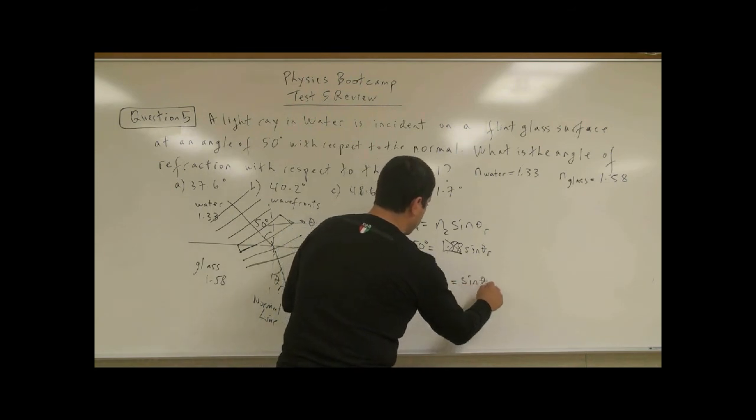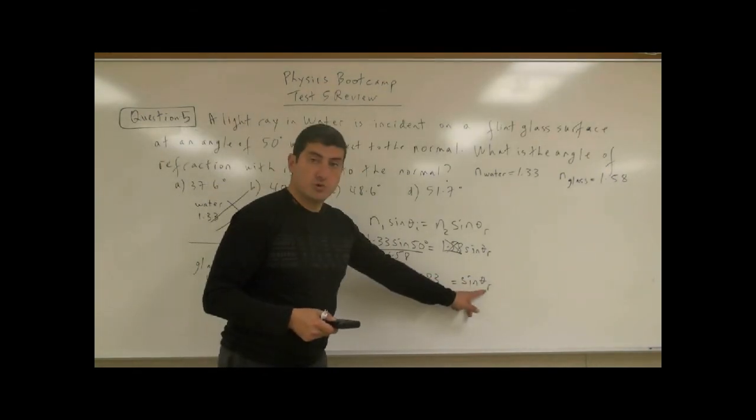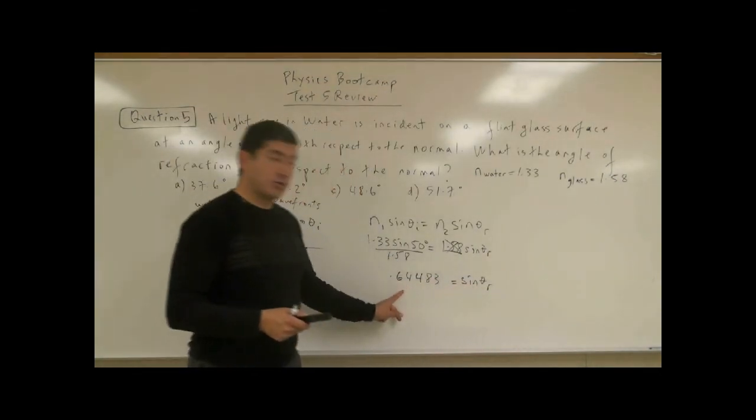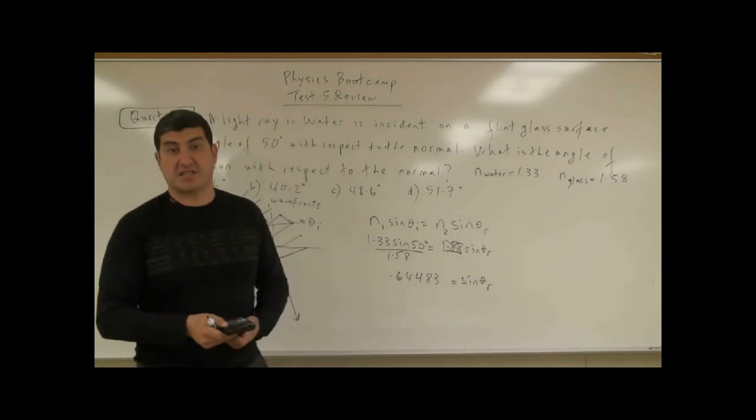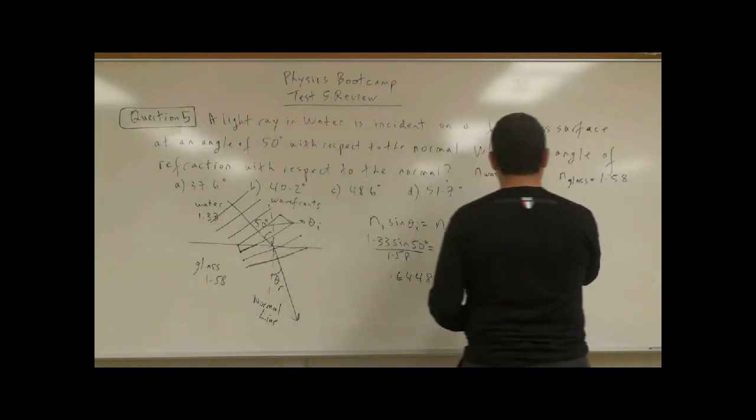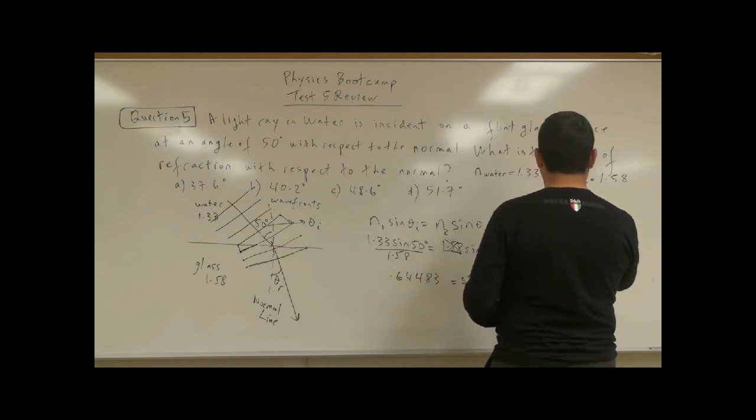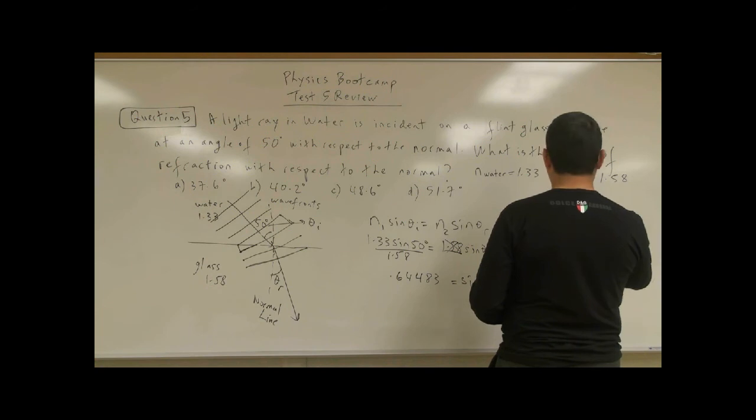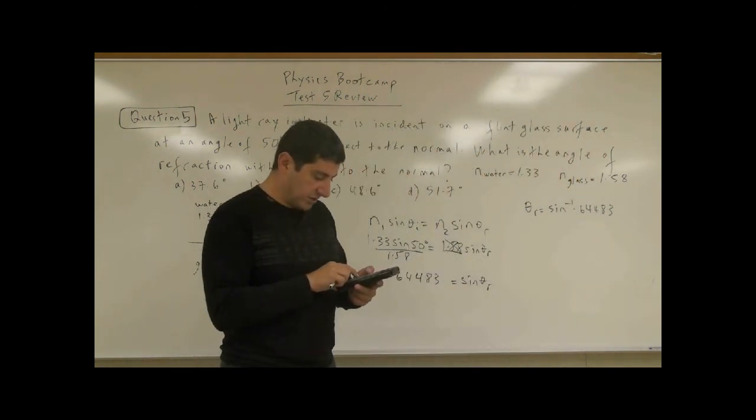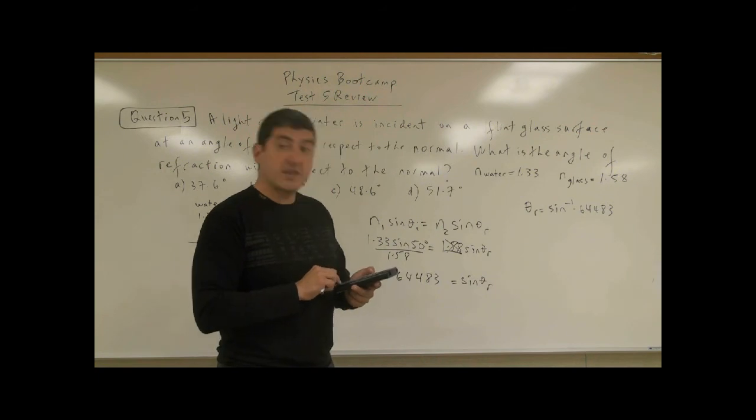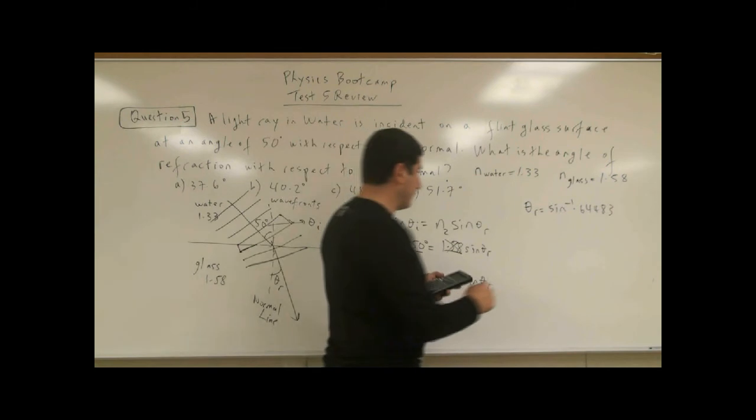And we get 0.6483. That's equal to sine of theta R. So if we want to know what angle is there whose sine is equal to 0.6483, then we have to take the sine inverse of both sides. So theta R is going to equal sine inverse of 0.6483. So now we take the sine inverse of the answer that we just got and we get 40.15 degrees.